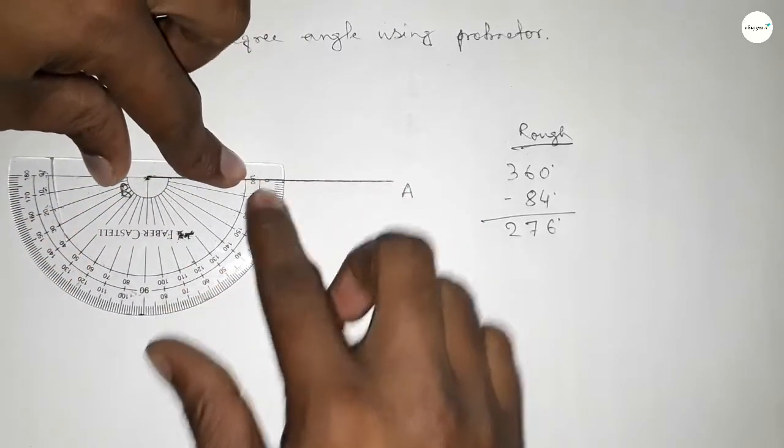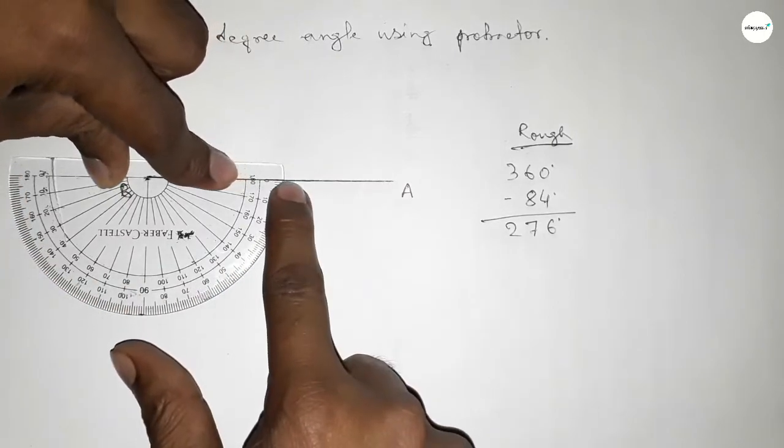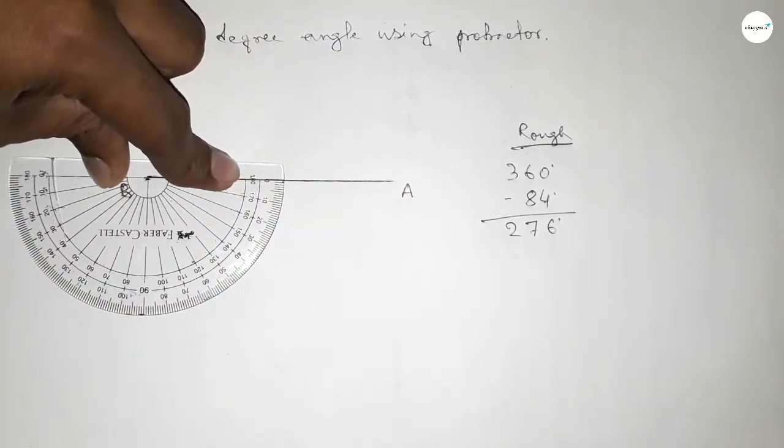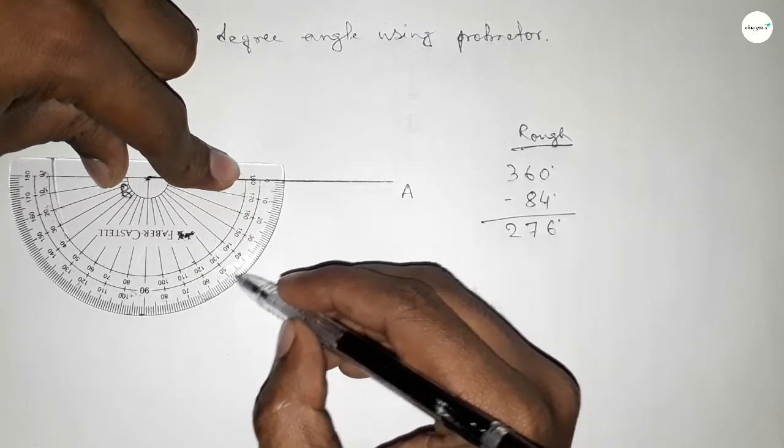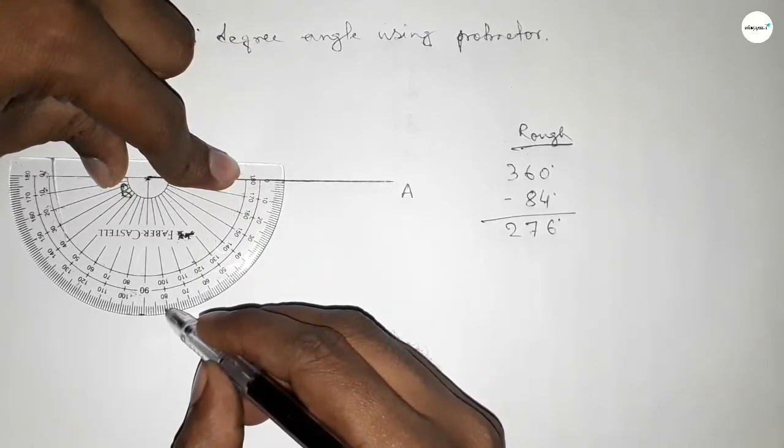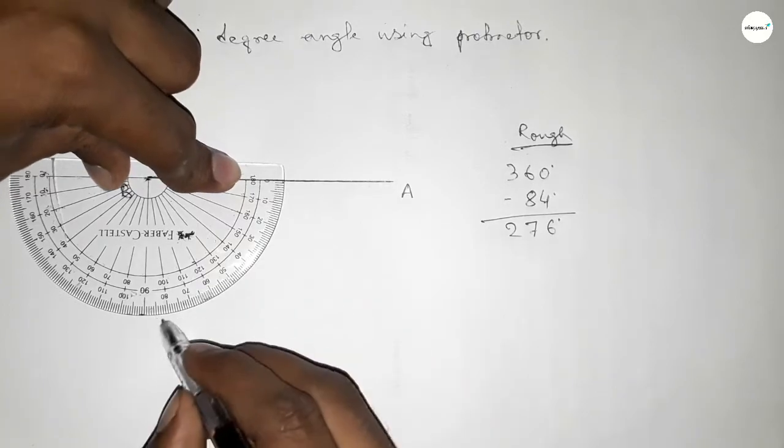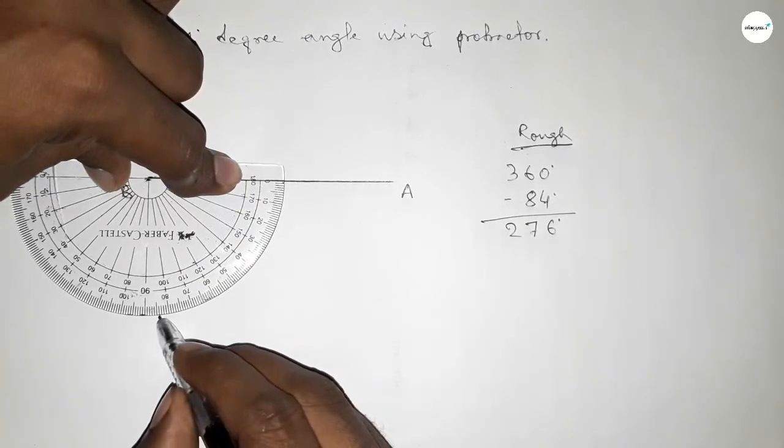So this is 360 degree angle. Now counting 84 degree angle. So this is 10, 20, 30, 40, 50, 60, 70, 80, 81, 82, 83, 84. So this is 84 degree angle.